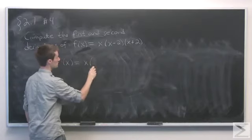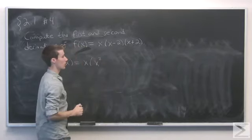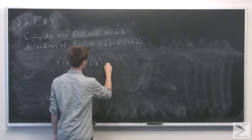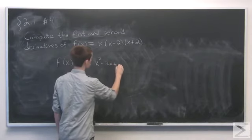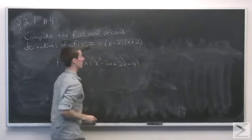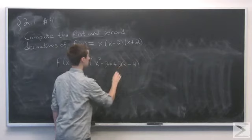So if we expand this, we have x times the last two parts of the product multiplied together. We have x² - 2x + 2x - 4. This -2x and 2x will cancel.